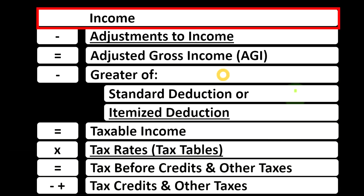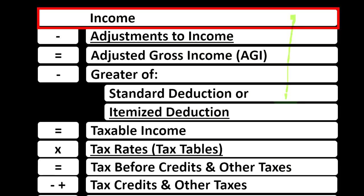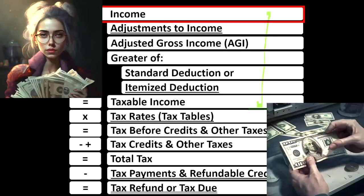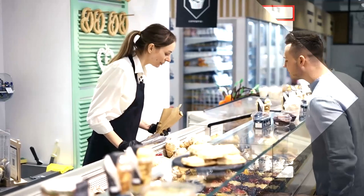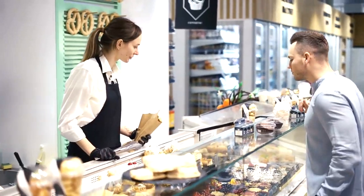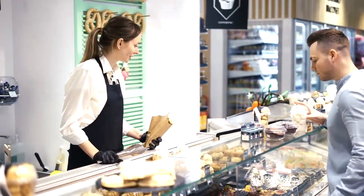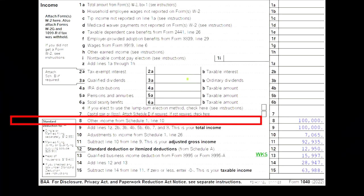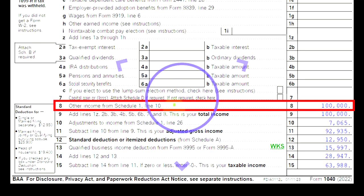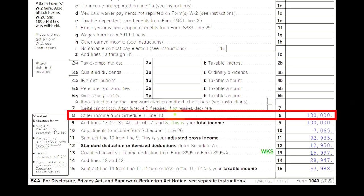Looking at the income tax formula, we're focused on line one income. The first half of the income tax formula is in essence an income statement, just an outline, with other forms and schedules flowing into these line items — one of those being Schedule C. The Schedule C flows into Schedule 1, which flows into the first page of Form 1040, line number eight.